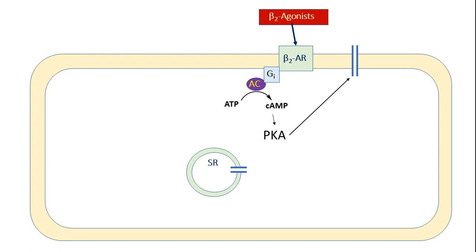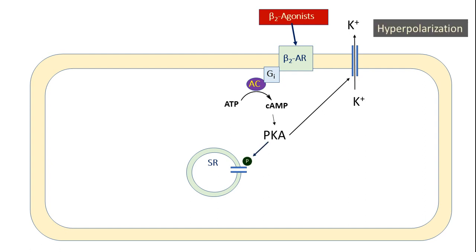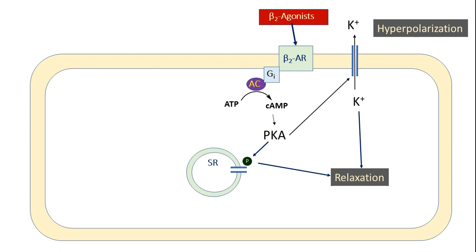Protein kinase A has dual activity. It activates calcium-dependent potassium channels, causing potassium efflux. It also phosphorylates the inositol triphosphate receptor present on the sarcoplasmic reticulum, thereby reducing positive charge within the cell — what we call hyperpolarization. All these events ultimately result in relaxation of the smooth muscle. When muscarinic receptors present on lung epithelium or smooth muscle are activated, the same kind of mechanism also ensures smooth muscle relaxation.